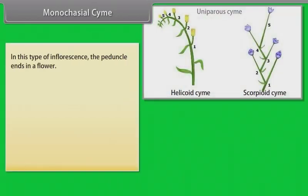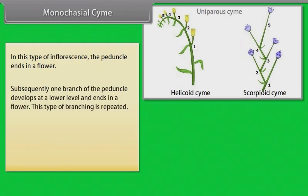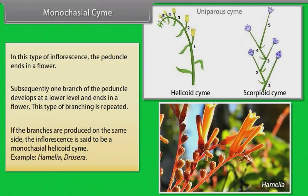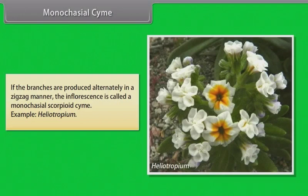In monocasial cyme, the peduncle ends in a flower. Subsequently, one branch of the peduncle develops at a lower level and ends in a flower; this type of branching is repeated. If the branches are produced on the same side, the inflorescence is a monocasial helicoid cyme — example: Hamelia, Drosera. If the branches are produced alternately in a zigzag manner, it is called a monocasial scorpioid cyme — example: Heliotropium.